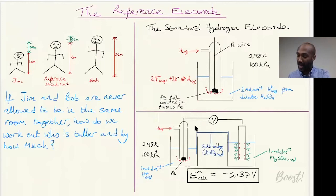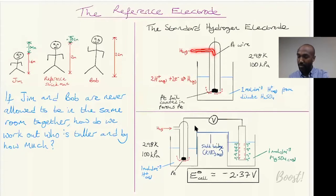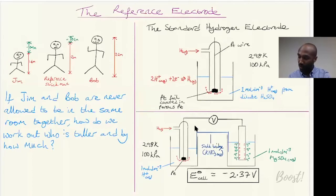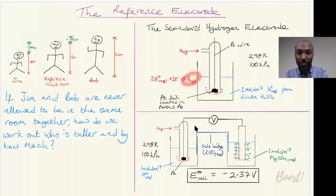Our reference electrode is the standard hydrogen electrode. You've got hydrogen gas being passed into a chamber containing a piece of platinum wire - which is a conductor - ending in a piece of platinum foil coated in porous platinum. The platinum is porous to allow hydrogen gas to infuse into the pores and to allow H⁺ ions dissolved in the solution to interact with the hydrogen gas. An equilibrium is established between 2H⁺ and hydrogen gas.